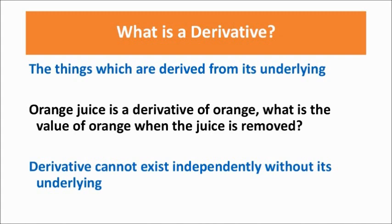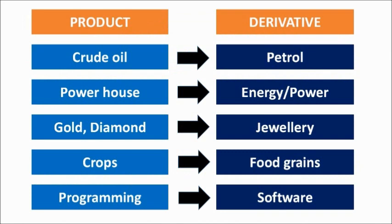What we are interested in is the orange juice. In the same way, a derivative can only be derived from the underlying — a derivative can't independently exist. Today, if you see in the world, we only enjoy derivatives. Here are a few examples.